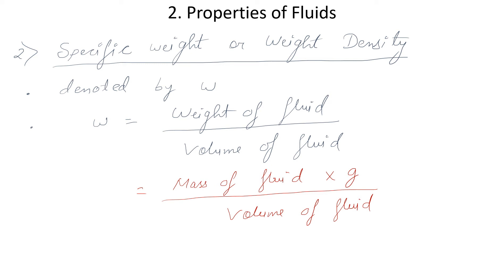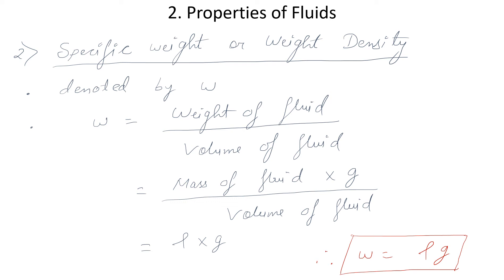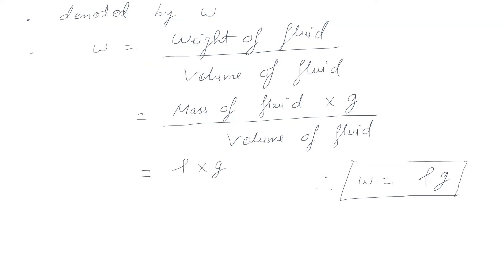We can rewrite this equation as density multiplied by gravity, because mass of fluid divided by volume is density. So specific weight equals the product of density (ρ) and acceleration due to gravity (g). For water, the value of specific weight is taken as 9.81 × 1000 newton per meter cube.